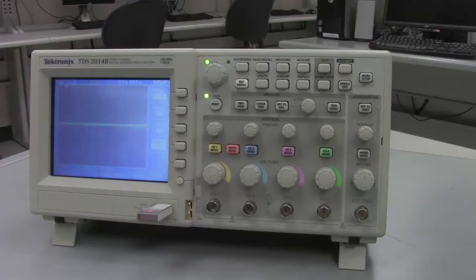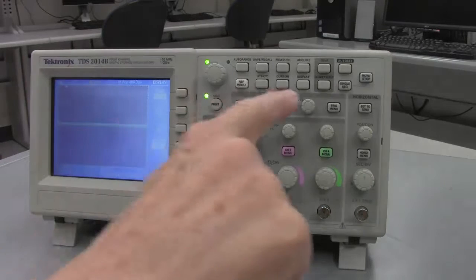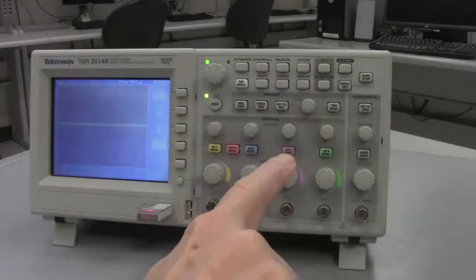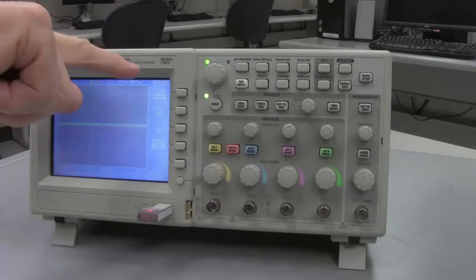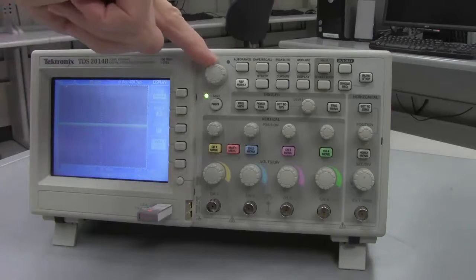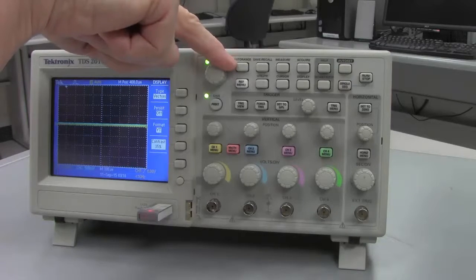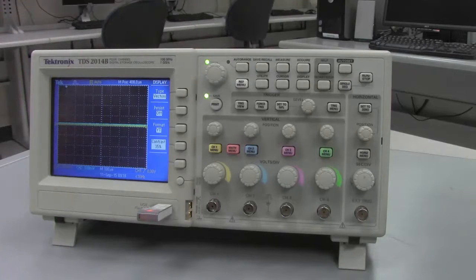So we're going to start by adjusting the contrast on the screen by pushing the display button, which then makes it so that you can adjust the contrast by turning the multifunction knob and bring the contrast down to something where we can see it.